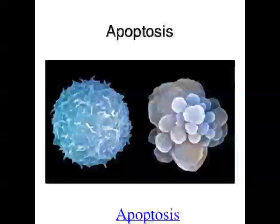If cells are dying too much and not enough cells are undergoing mitosis to reform, you can have degenerative diseases. Alzheimer's and multiple sclerosis are examples of degenerative diseases where too many cells are dying and not being replaced. So you want cells replicating via mitosis and also dying via apoptosis all the time, just to make sure your body stays nice and healthy.